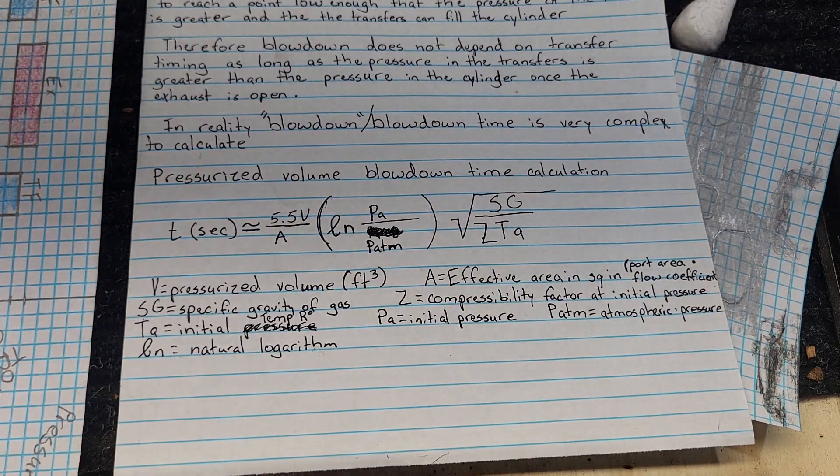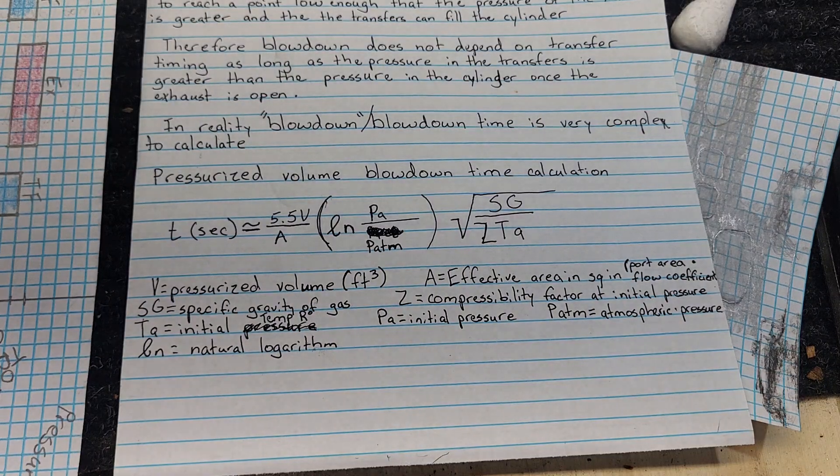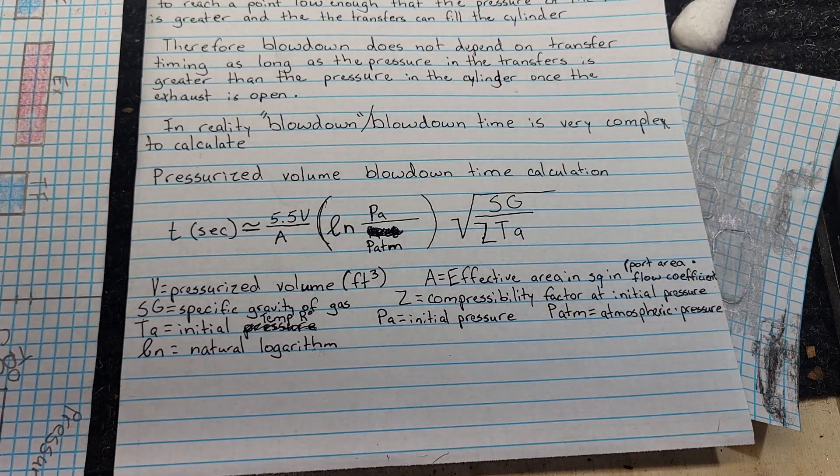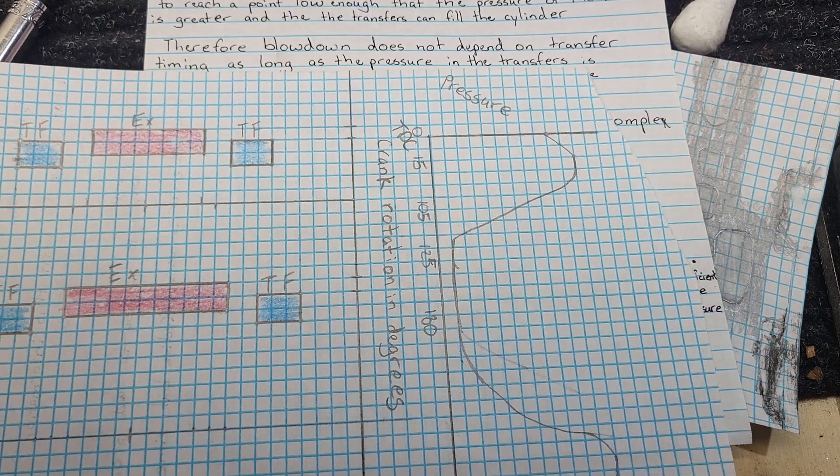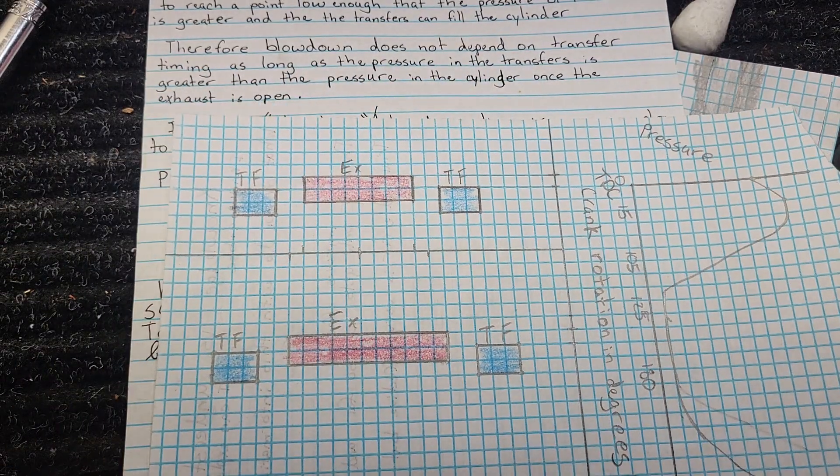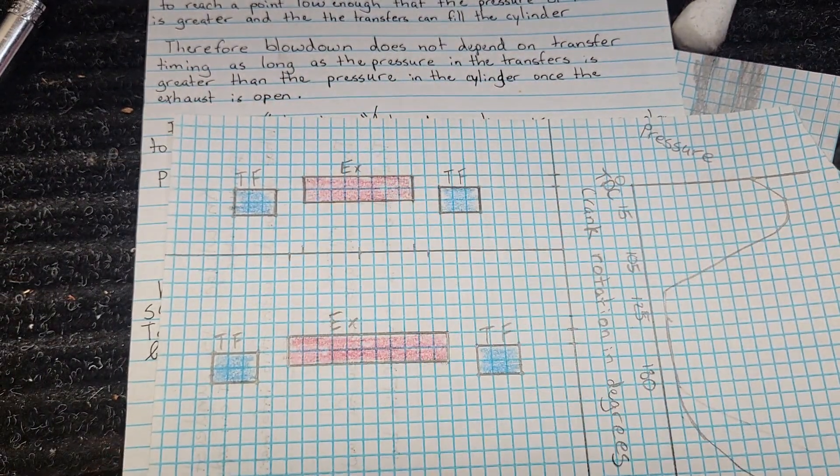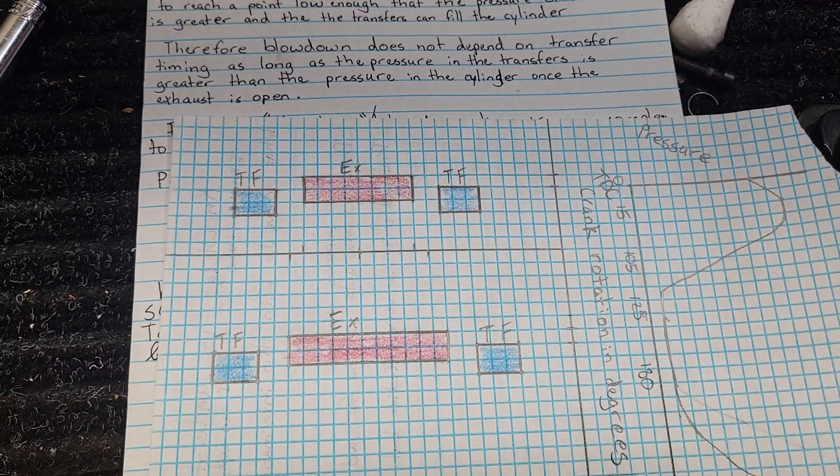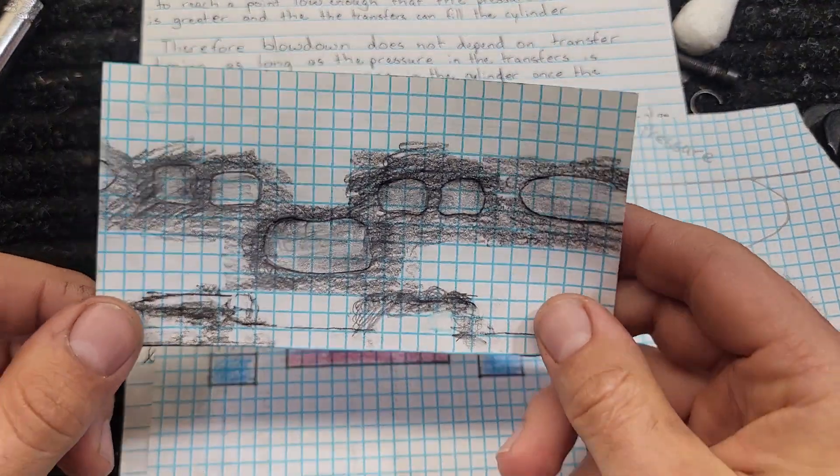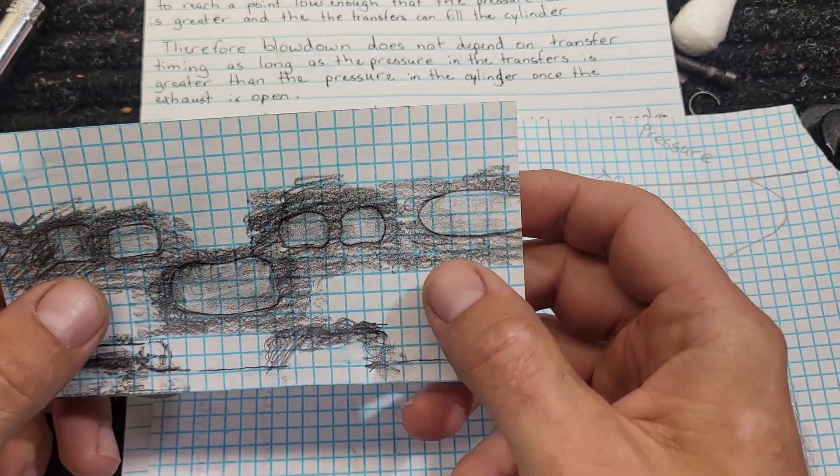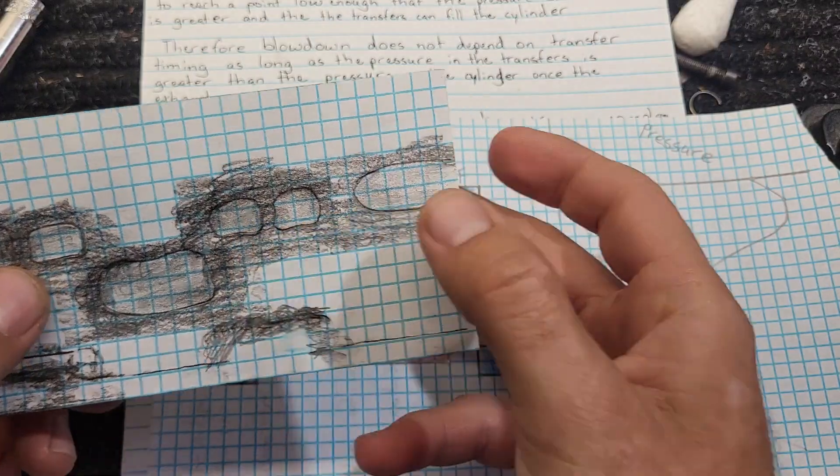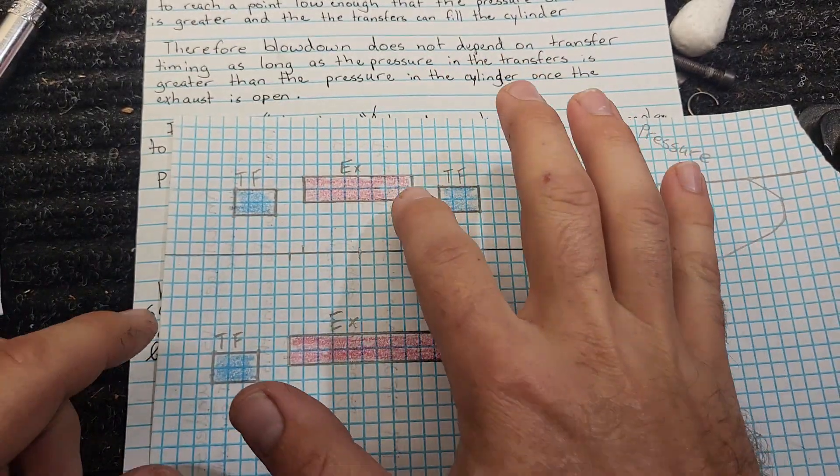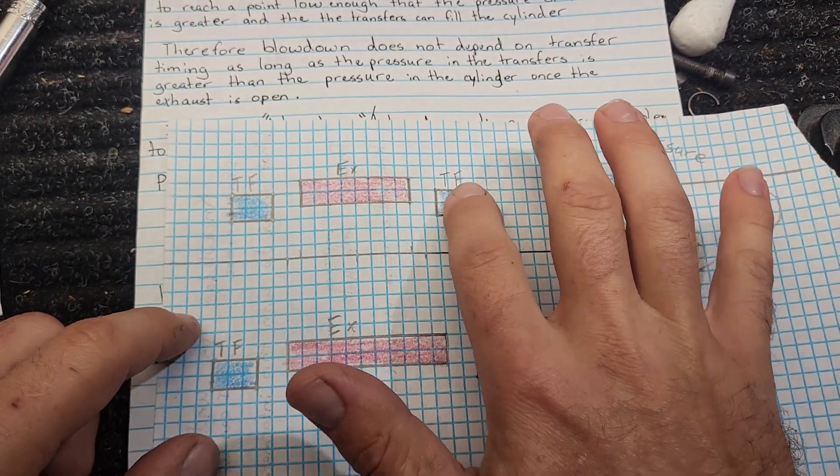I do better with pictures. So, I drew some pictures, and we're going to make some assumptions here. What these pictures are is just a really crude port map. This would be an exhaust. These are transfers. I labeled it as, hey, this is an exhaust. These are transfers.